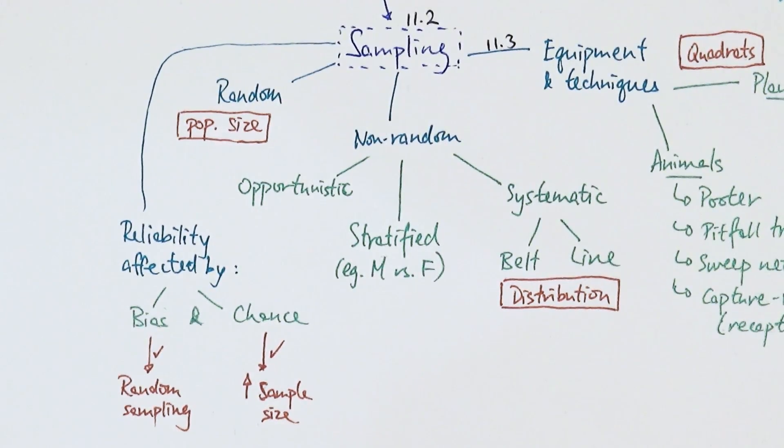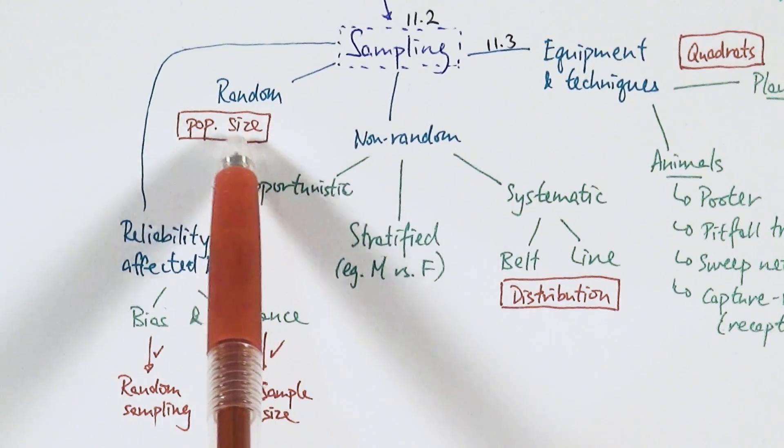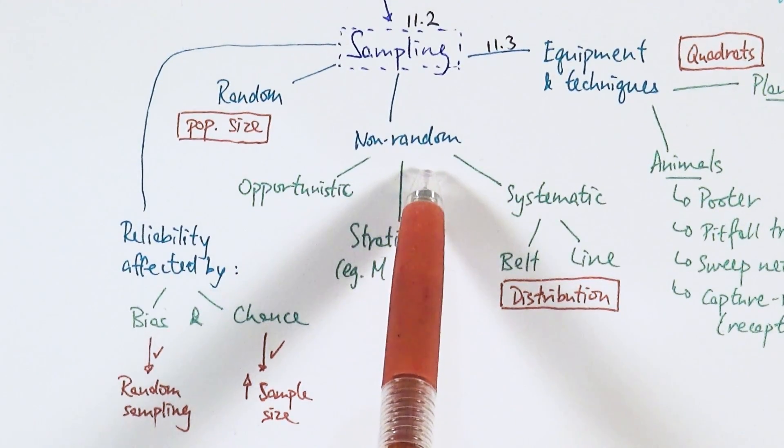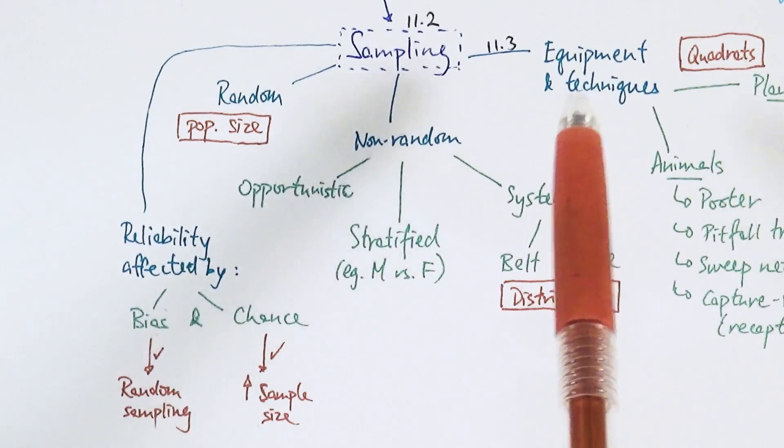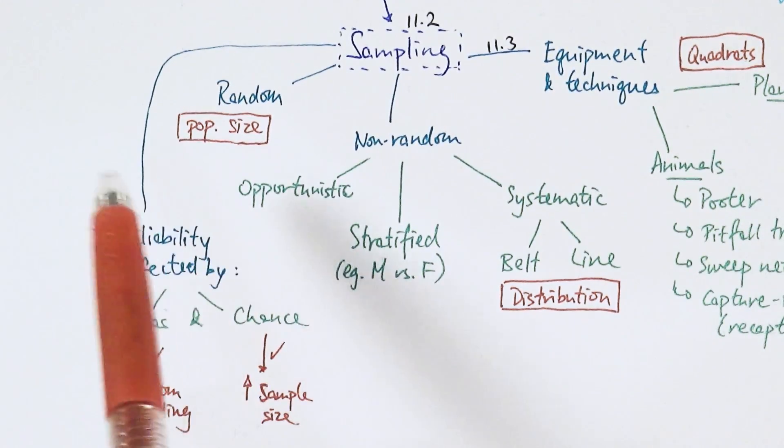We mentioned species biodiversity and calculating it with Simpson's index, but we need to know the number of individuals in different species, which we do by sampling. Random sampling and non-random sampling use a variety of equipment and techniques, then we evaluate our data for reliability.